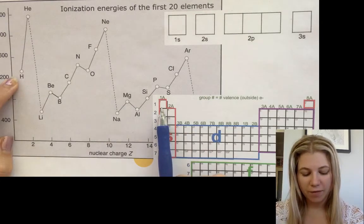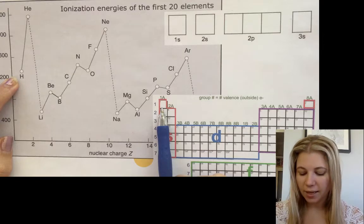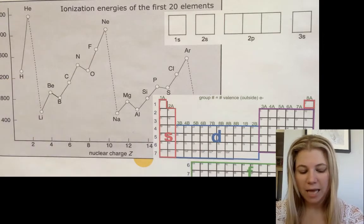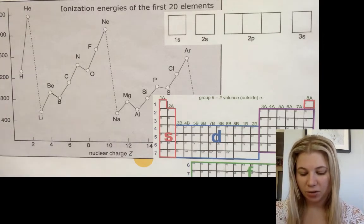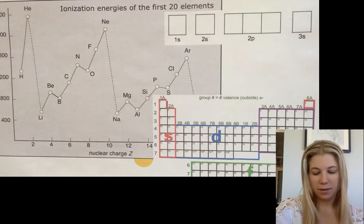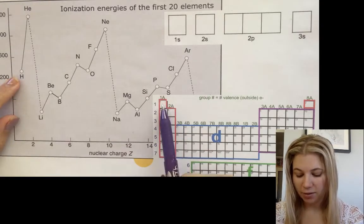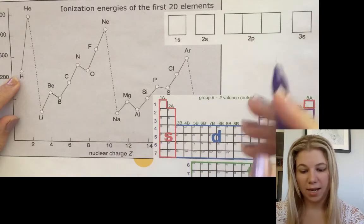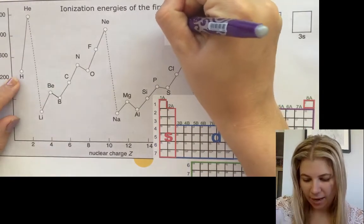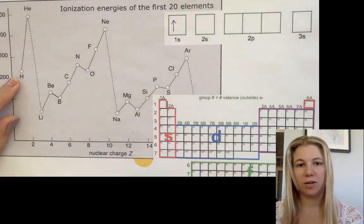So here we've got our first element hydrogen, which would sit here on the periodic table. So our first electron would be in our S, it's in the S block so it's going to be in our 1S orbital and it's going to have an electron going in one particular direction.